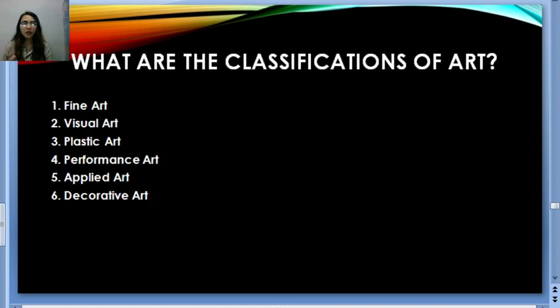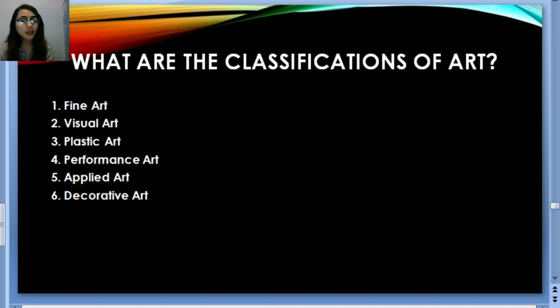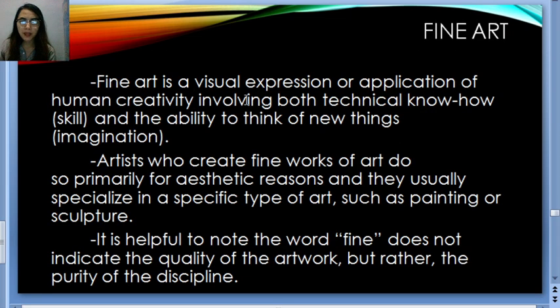Now let's talk about the classification of arts. We have six: fine art, visual, plastic, performance, applied, and decorative. Let's start with fine art — it is the visual expression and application of human creativity involving both the technical know-how and the ability to think of new things.